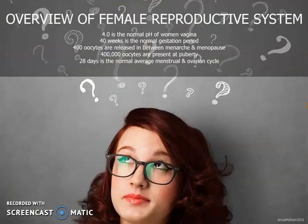Overview of the female reproductive system: 4.0 is the normal pH of a woman's vagina; 40 weeks is the normal gestational period; 400 oocytes are released between menarche and menopause; and 400,000 oocytes are present during puberty.